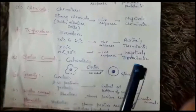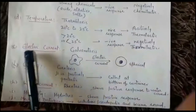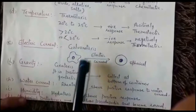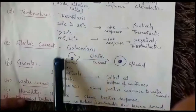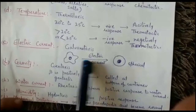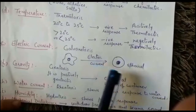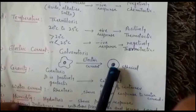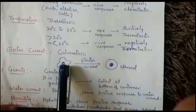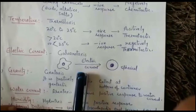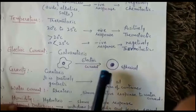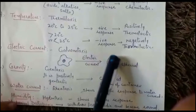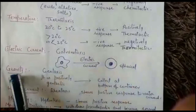Its response to electric current is known as galvanotaxis. If electric current is applied to a culture of amoeba, it immediately rounds off its body — it becomes spherical, assuming a spherical shape.